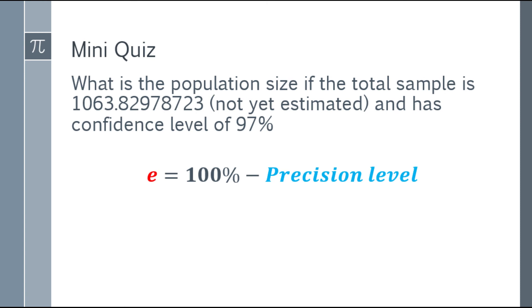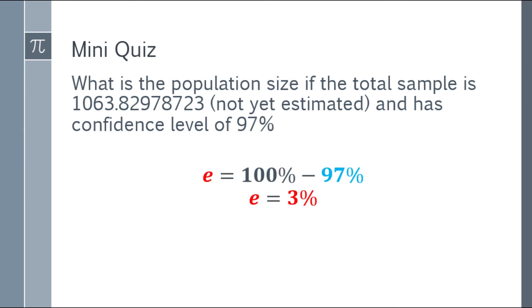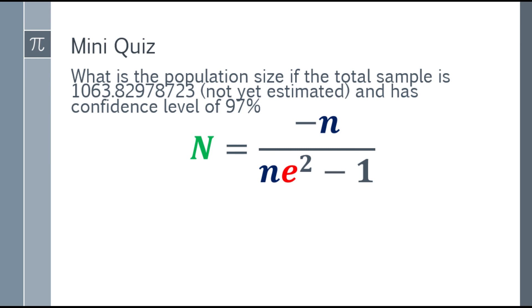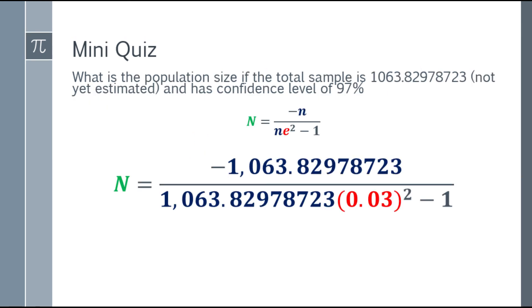Our margin of error is 100% minus the precision level. That will be 100% minus 97%, and you will have a margin of error of 3%. Now we can place the formula, and after that, we can substitute the given values into the formula.